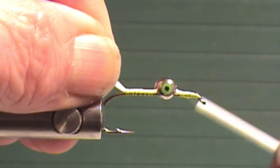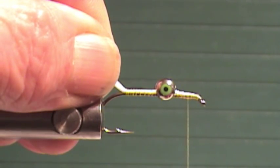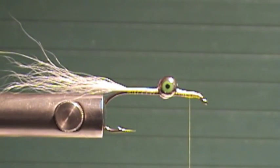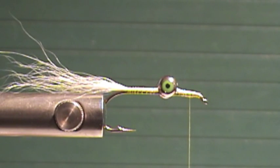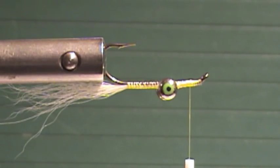Bring my thread again in front and just back from the eye of the hook. We have our tail attached. I can now turn the hook over and we'll do the wing.